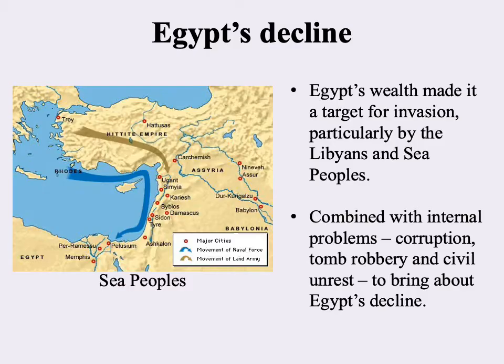As happened with the previous kingdoms, the New Kingdom eventually came to an end — though in this case a long, drawn-out affair. Egypt's wealth made it a target for invasion; they started being subjected to attacks from the Libyans in North Africa and from a group known as the Sea Peoples, probably coming down from the northern Mediterranean. There were also internal problems: corruption, tomb robbery, and civil unrest — all of this bringing about Egypt's decline, eventually being subjected to attacks by the Assyrians and then conquered by the Persians.